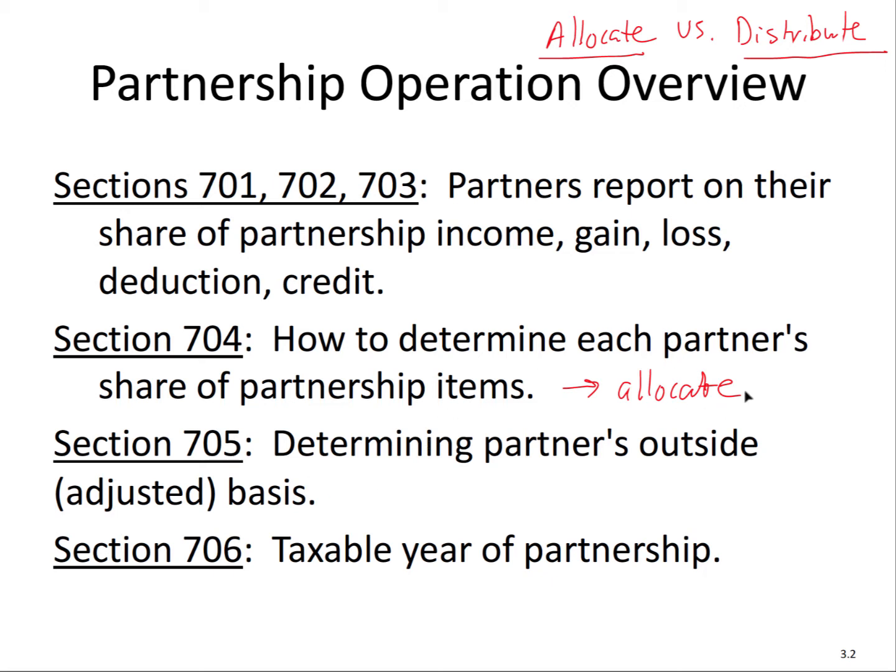Section 704 deals with how exactly we allocate. Under the Internal Revenue Code, it says that we look at the partnership agreement and it will be respected, assuming the allocation meets substantial economic effect. We're not going to go into what substantial economic effect means because that's beyond the scope — it's a more advanced topic.